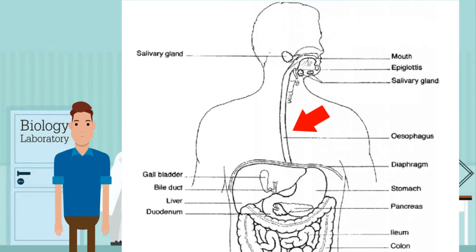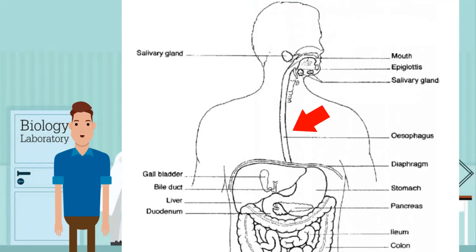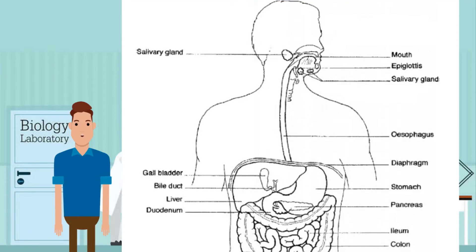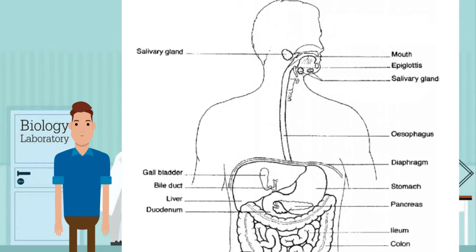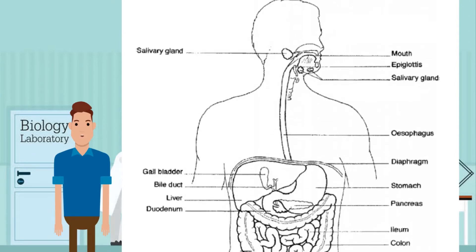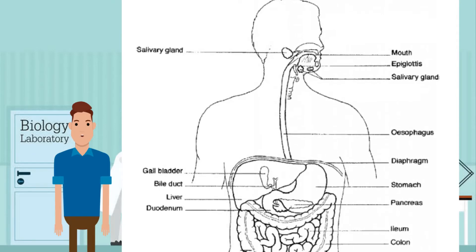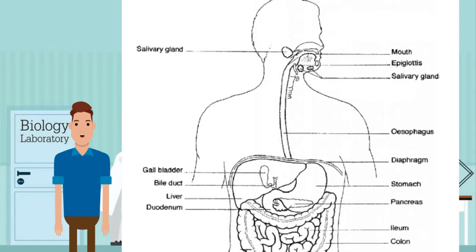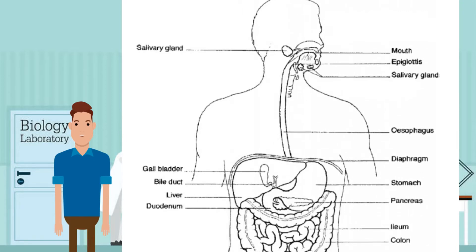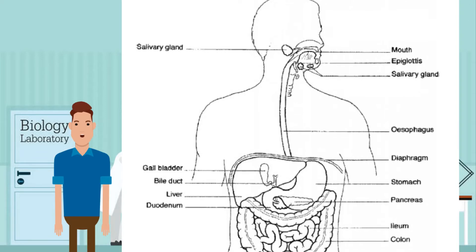Next, the esophagus — the food pipe — is made of muscular walls and connects the mouth and the stomach. The muscles contract to push the food into the stomach; this action is called peristalsis. When vomiting, the muscles move the other way; this action is called antiperistalsis. The cluster of food in the esophagus is called a bolus.